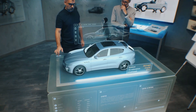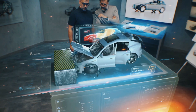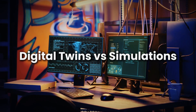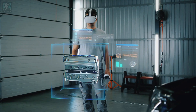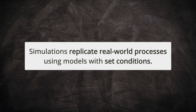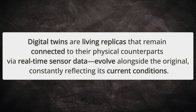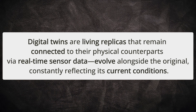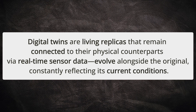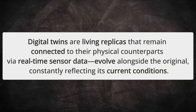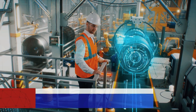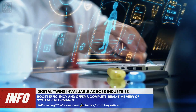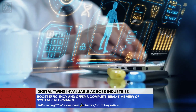For instance, automotive manufacturers can design a car and virtually crash test it before production. Digital twins and simulations may look similar on the surface, but they serve different purposes. Simulations replicate real-world processes using models based on set conditions, while digital twins are living replicas connected to their physical counterparts through real-time sensor data — they evolve alongside the original object, reflecting current conditions. This is why digital twins are becoming invaluable across industries, offering a complete real-time view of system performance.